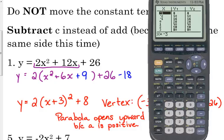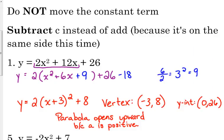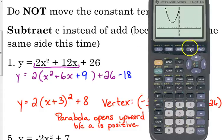So you can always plug those in to catch any careless mistakes. And then you can also confirm where your vertex is. Looking at the graph, you can tell that's at (-3, 8), not (3, 8).